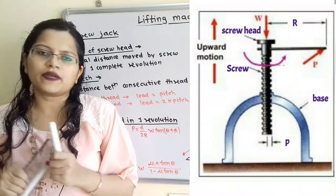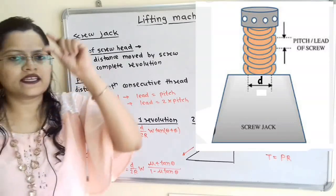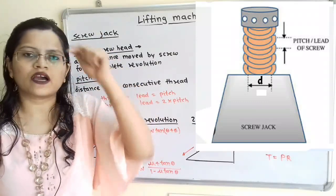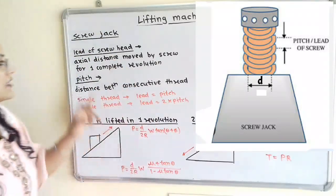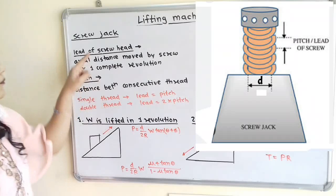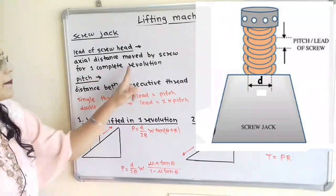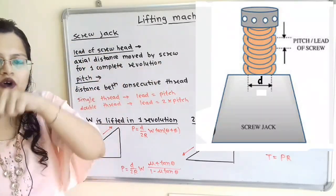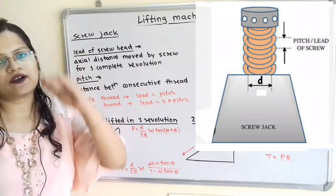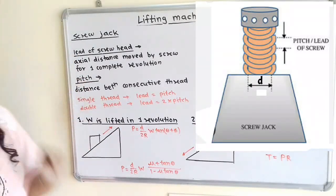Now we will understand some important concepts. The first is the lead of the screw head. Lead is nothing but the movement in the upward or downward direction about the axis — that is, the axial distance moved by the screw for one complete revolution. So the term 'lead' refers to the axial distance moved in one complete rotary motion, in the upward or downward direction. This is known as the lead of the screw.